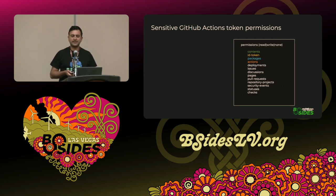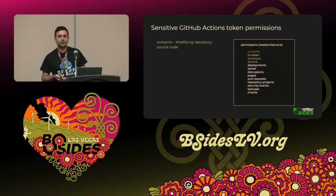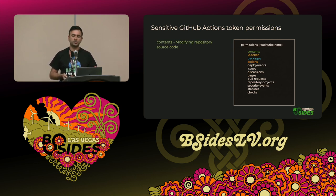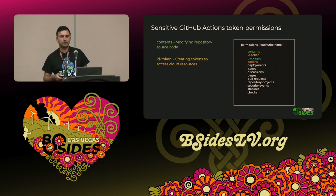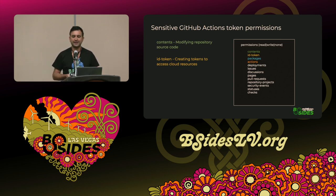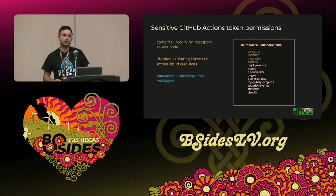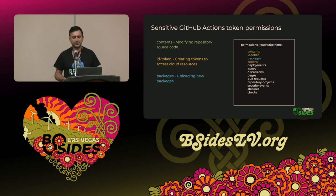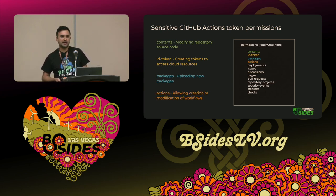Let's review some of the sensitive scopes we can assign to GitHub Actions. 'Contents' — the obvious one — allows the workflow to push new code to the repository. 'ID token' allows your workflow to authenticate against a cloud provider like AWS or Azure on your behalf via the OIDC protocol. 'Packages' allows the workflow to upload new packages to be consumed later by the production environment or by your customers. And lastly, 'actions' allows the administration of the GitHub Actions part of the repository.